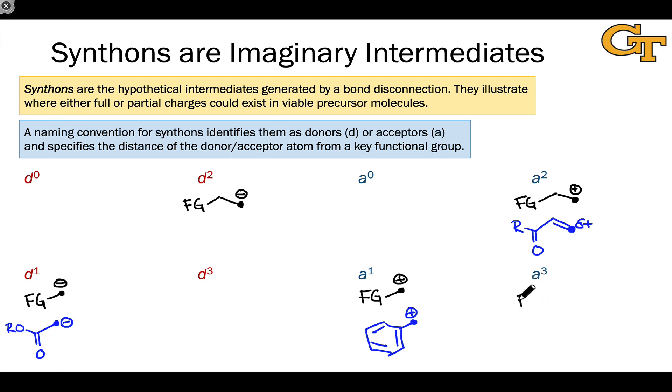An A3 synthon naturally has the functional group three carbons away from the acceptor atom here with positive charge. And an A0 has the acceptor atom directly on the functional group. A good example of an A0 synthon is the nitronium cation, which is used to install the nitro group in electrophilic aromatic substitutions. This is the nitro functional group, and an atom within the functional group, the very nitrogen itself, bears positive charge.